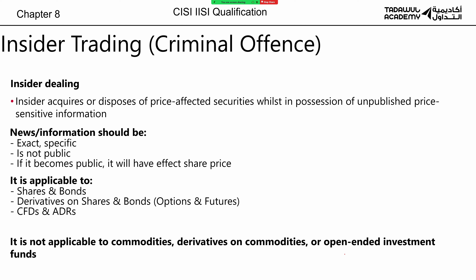For example, if your CEO is going to resign and nobody knows that except for you, and you know the resignation will affect the share price, so you go and secretly trade based on that information — trading on information that is specific, private, and will have an effect on the share price. That is insider trading, and it's criminal, so there's both a fine and jail.